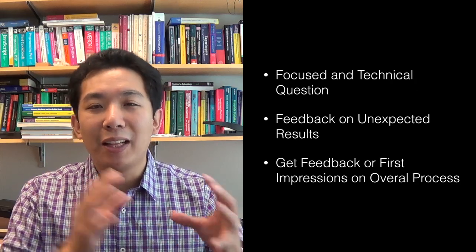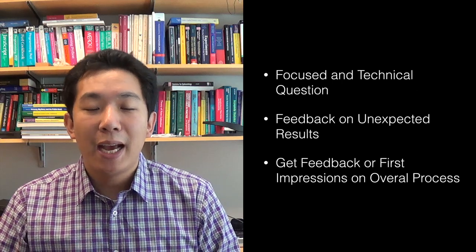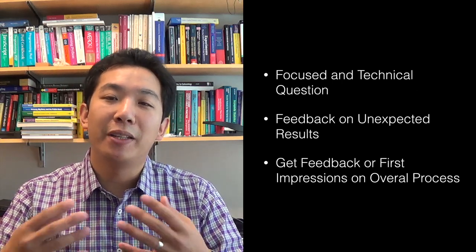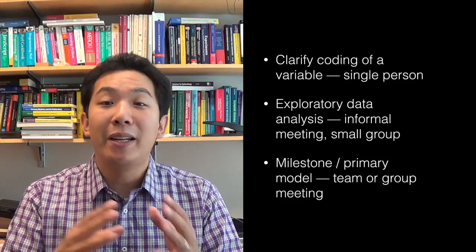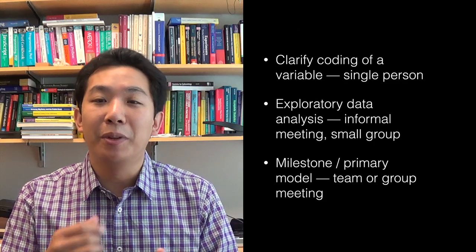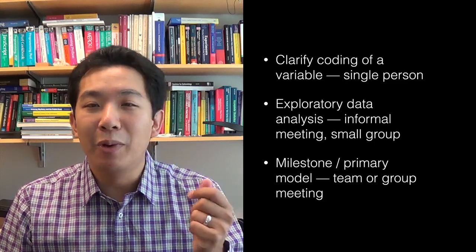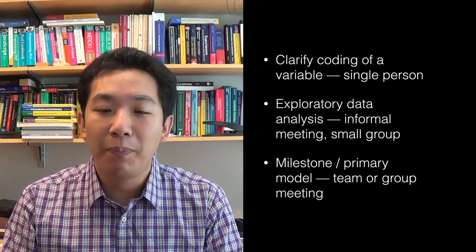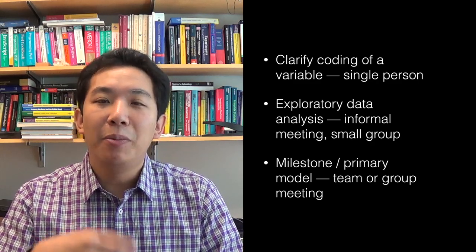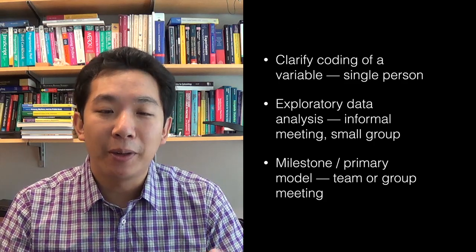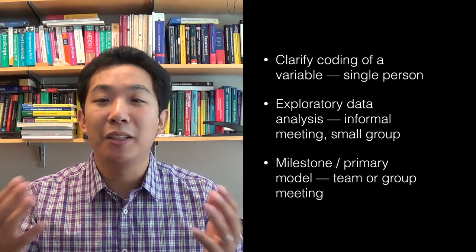It's important to classify the purpose of a given communication and to provide the appropriate environment and audience for that communication. For example, at a narrow level, you might want to clarify the coding of a variable because the metadata is unclear — maybe a variable is labeled zero or one and you don't know what each means. There may be a specific person you can talk to, and the communication will be very brief and to the point, with the answer being essentially a single fact.